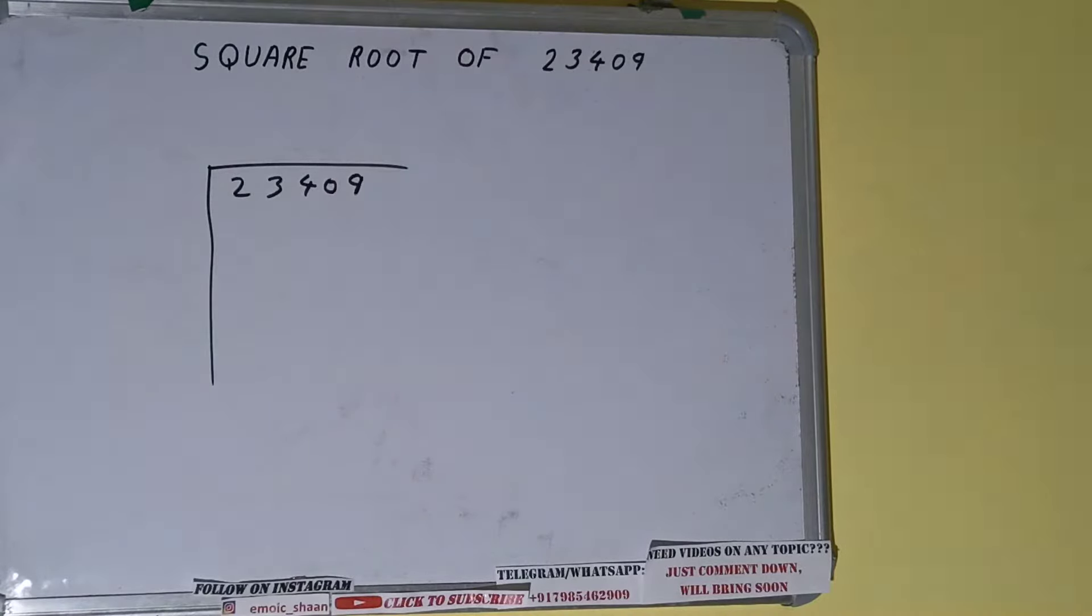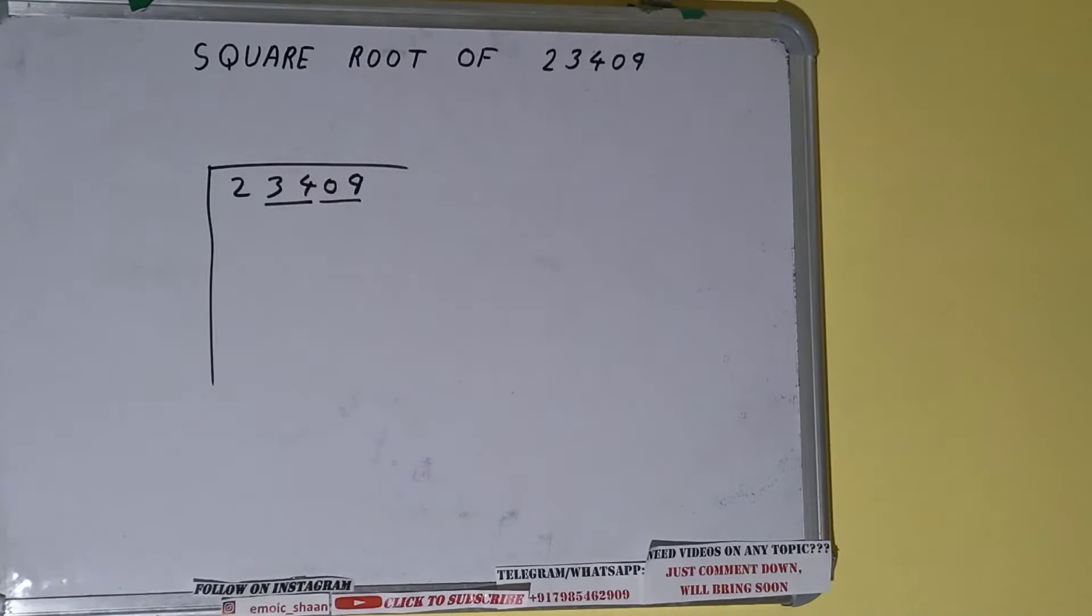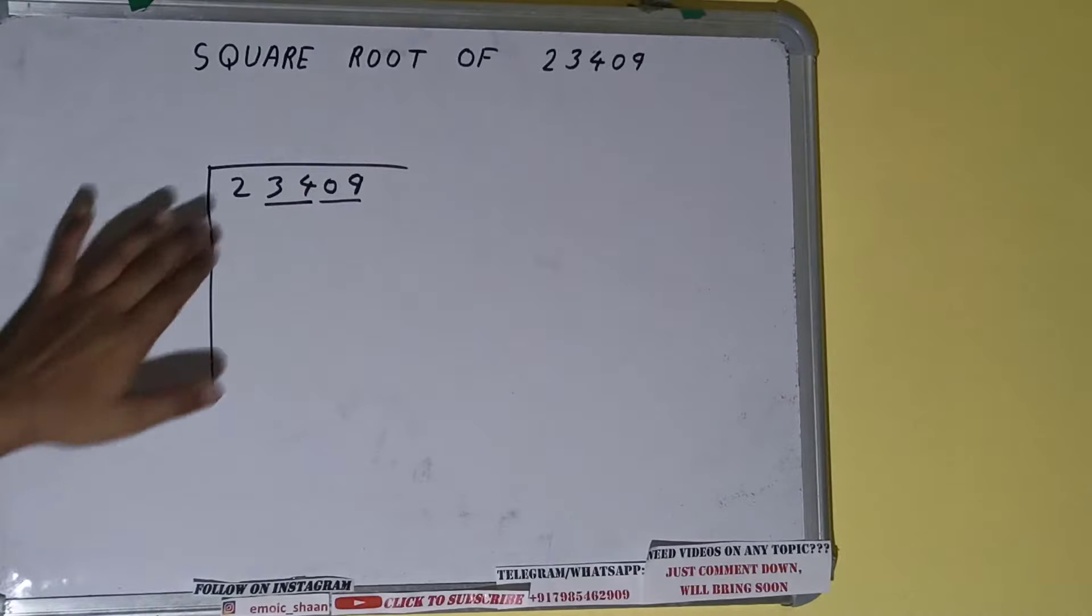The next thing we need to do is form pairs from the right hand side. So one pair will be this, one pair will be this, and this two will be left out. So first we'll divide this two and then we'll bring down the pairs.